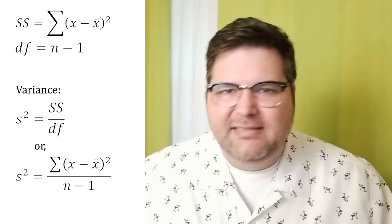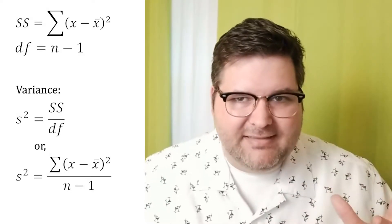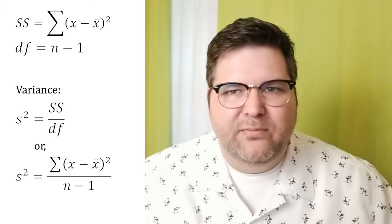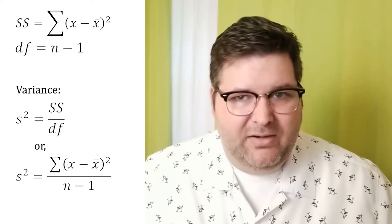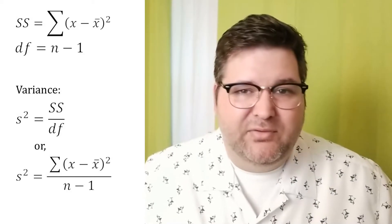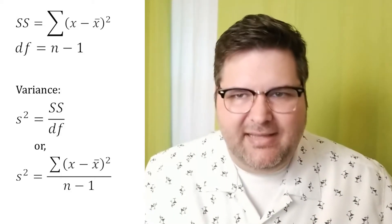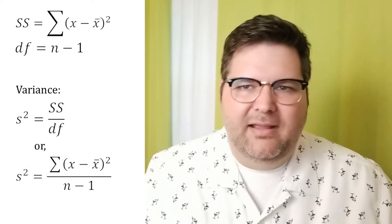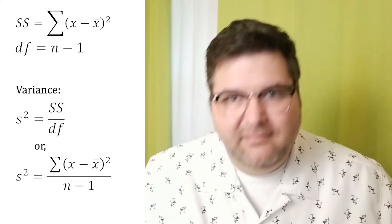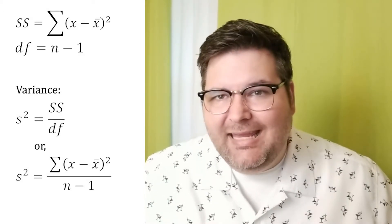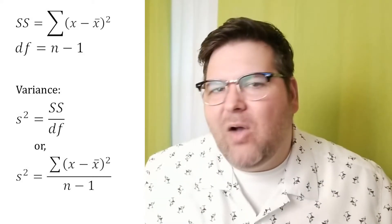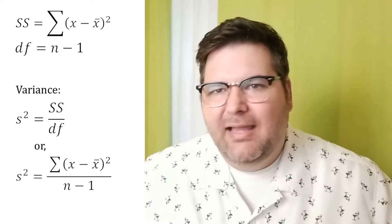The first way is I can say the variance is equal to the sum of squares, SS, divided by the degrees of freedom. The second way is I could say the variance is equal to the sum of squares, sum of x minus x-bar squared, divided by the degrees of freedom, n minus one. So these two are mathematically equivalent. They're the same. I'm just substituting how I label the top and bottom.